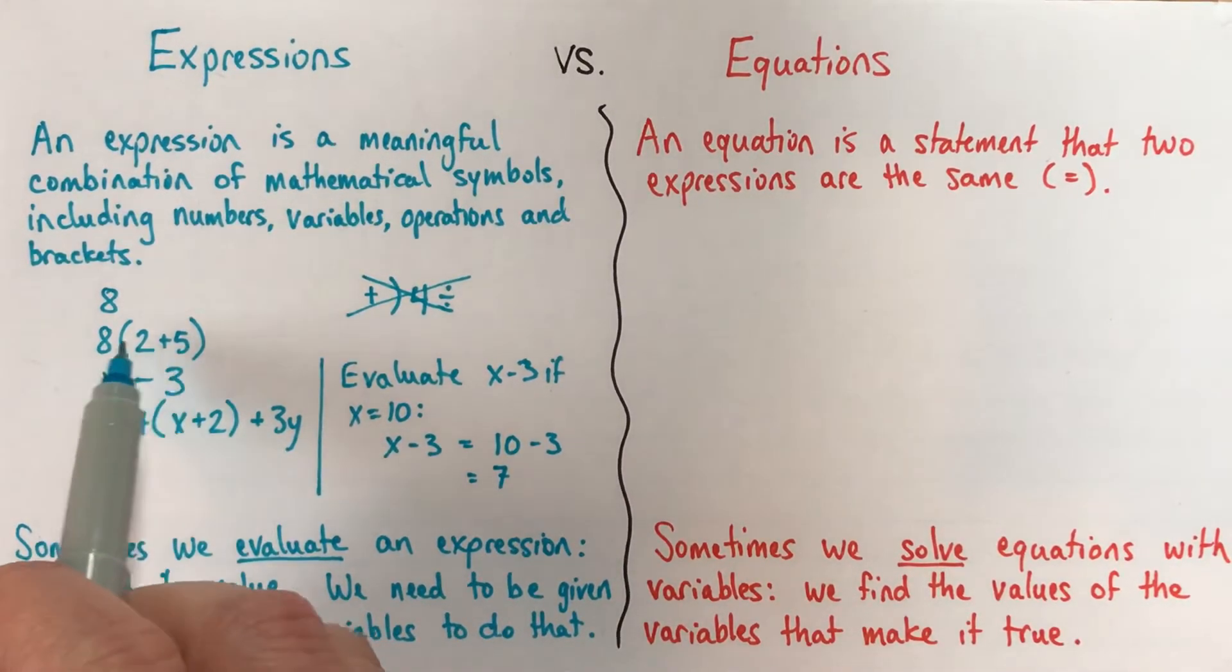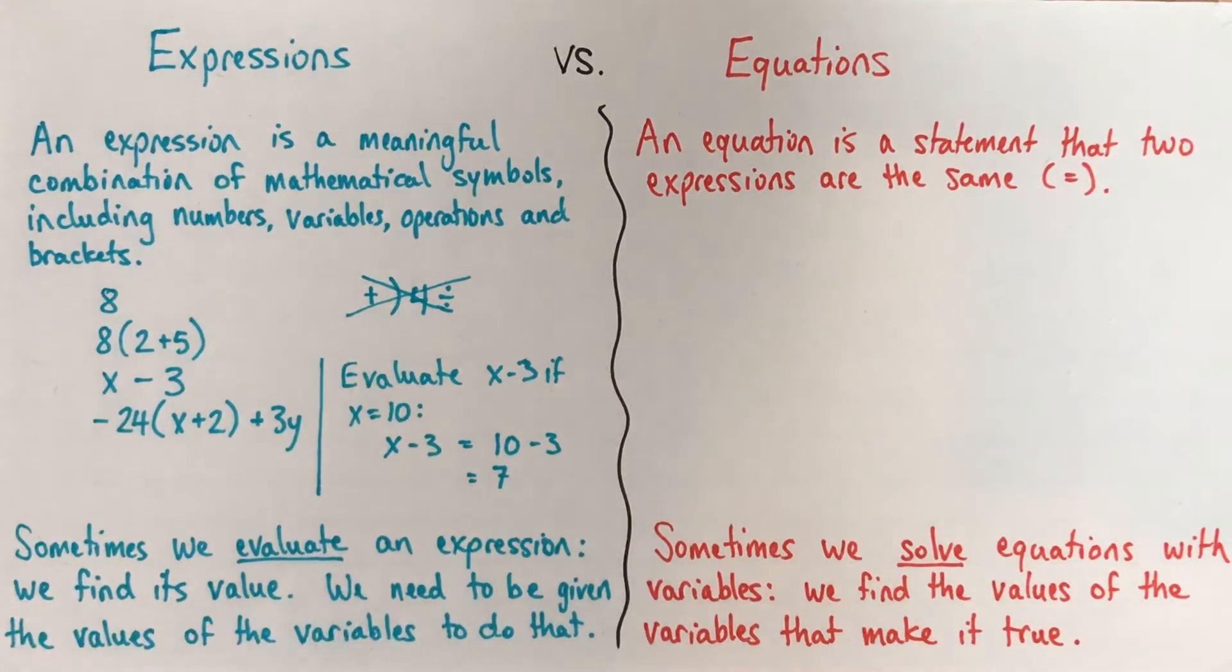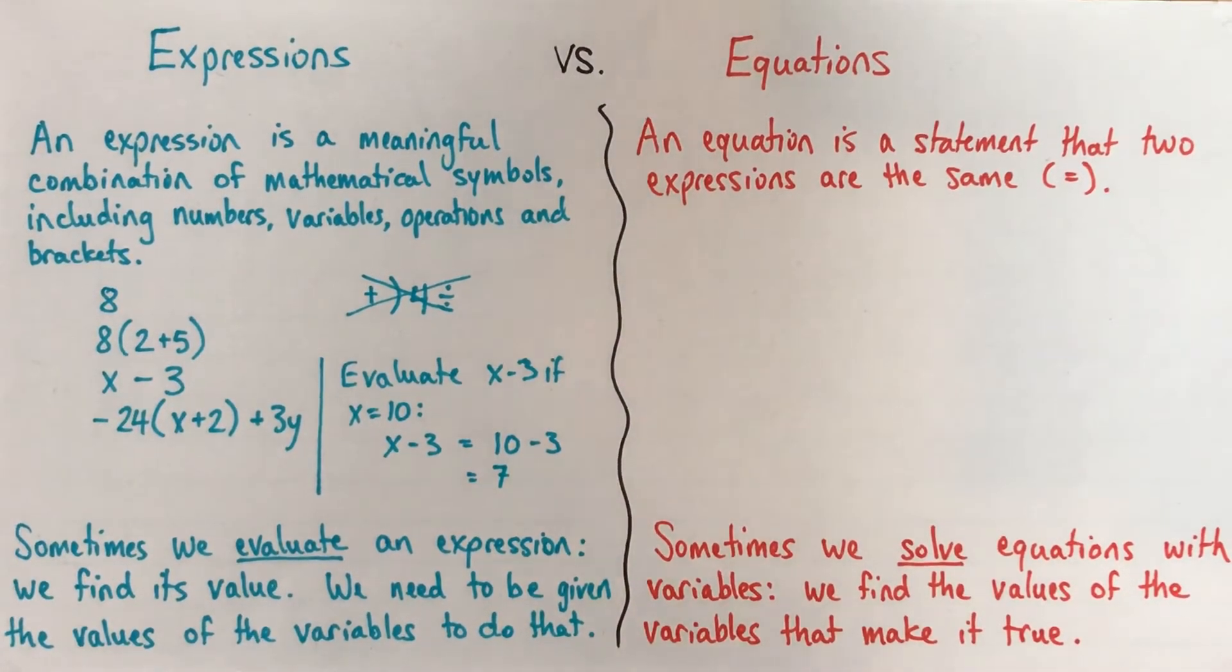If we have an expression without variables, of course, we could just calculate what this is equal to already. 2 plus 5, we start with that because it's in brackets, that's 7 times 8, so that's equal to 56. All right, so that's expressions.